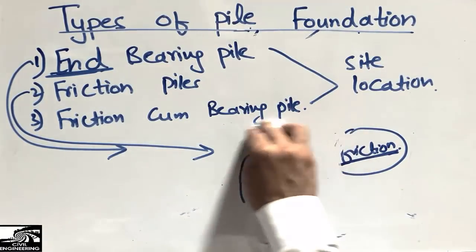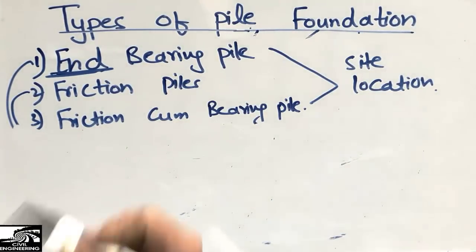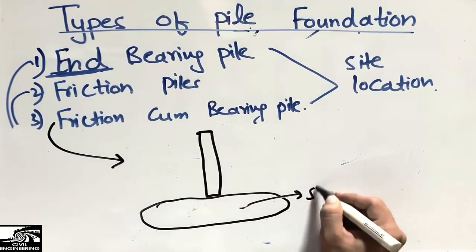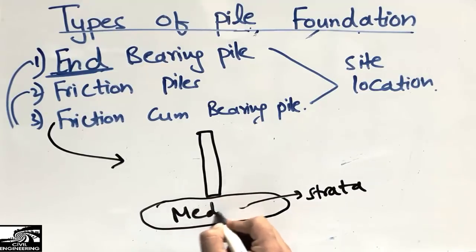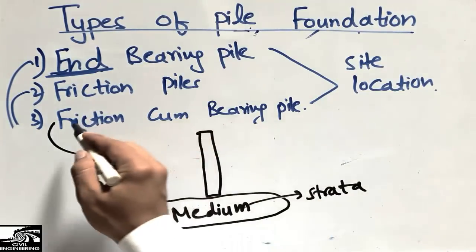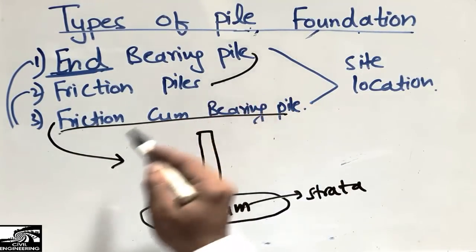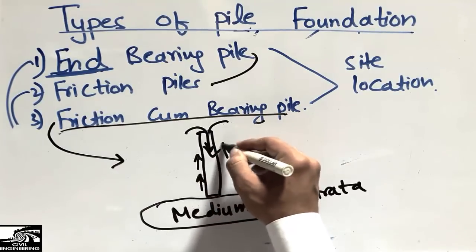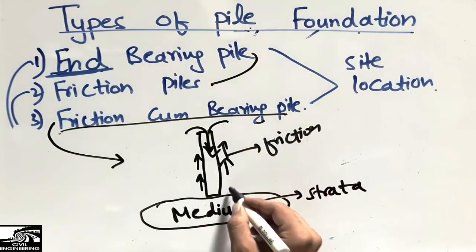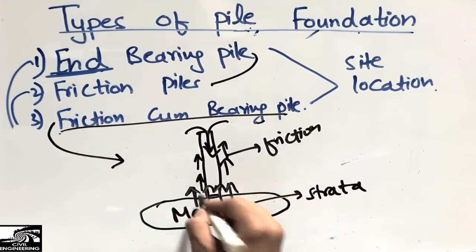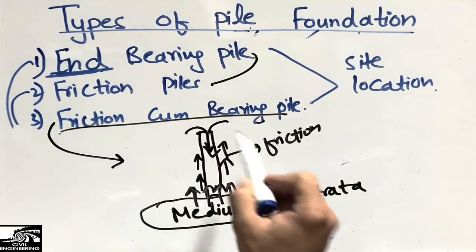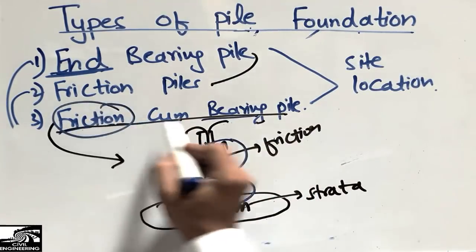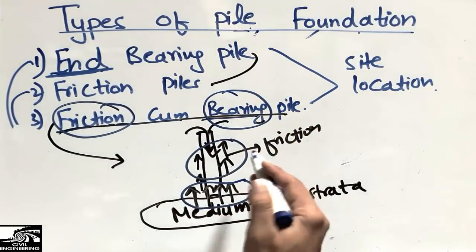The third type is the friction-combined bearing pile. It is used where the strata is medium — neither very hard nor very weak. This pile is a combination of the previous two types. Some of the resistance is provided by friction along the sides of the pile, and some resistance is provided by end bearing at the bottom. Both actions are combined, which is why it is called the friction-combined bearing pile.